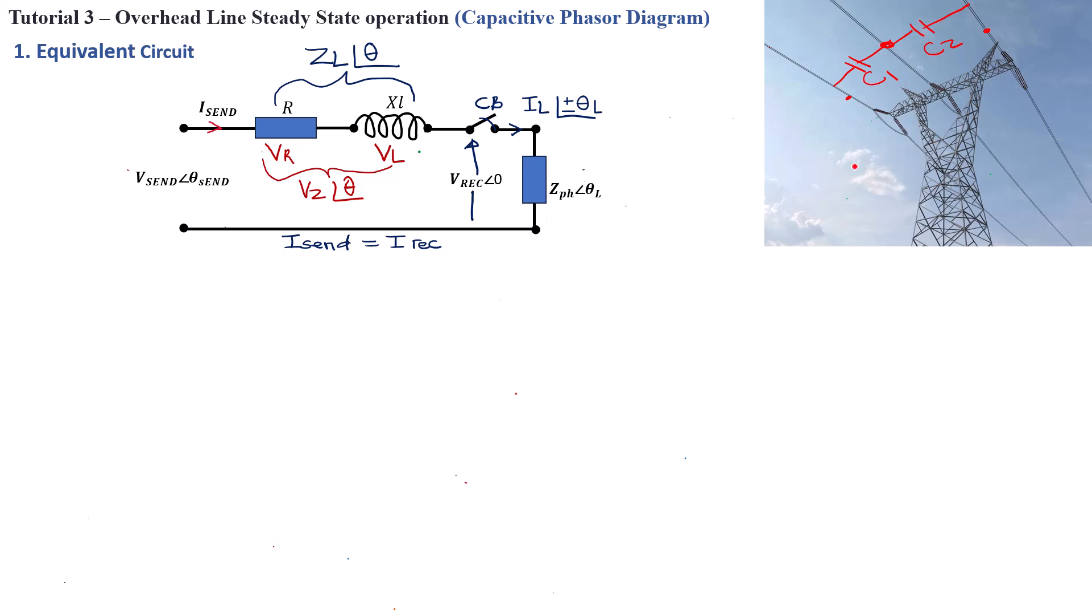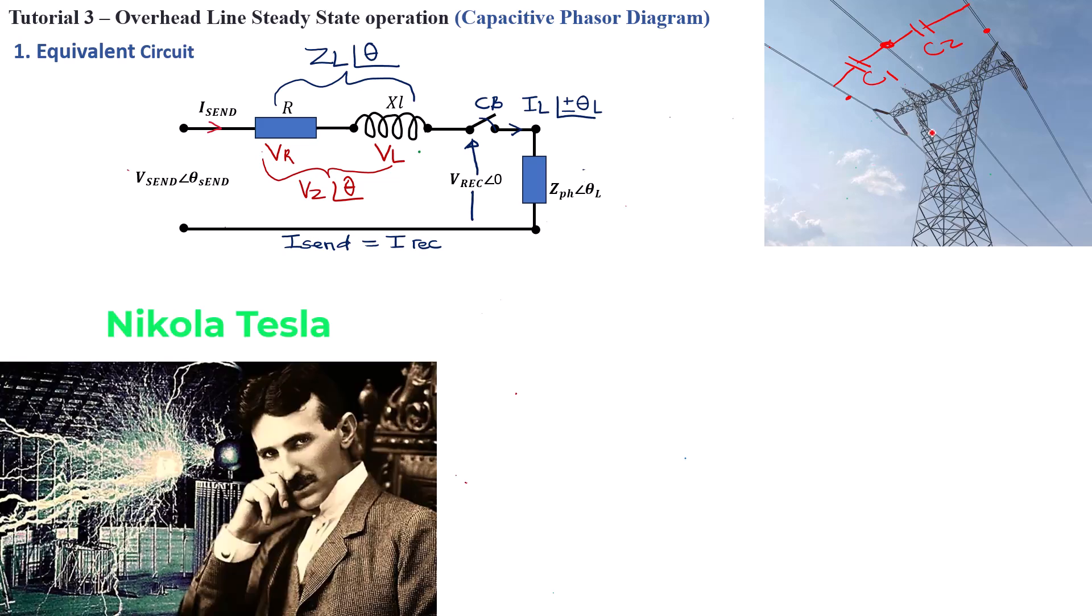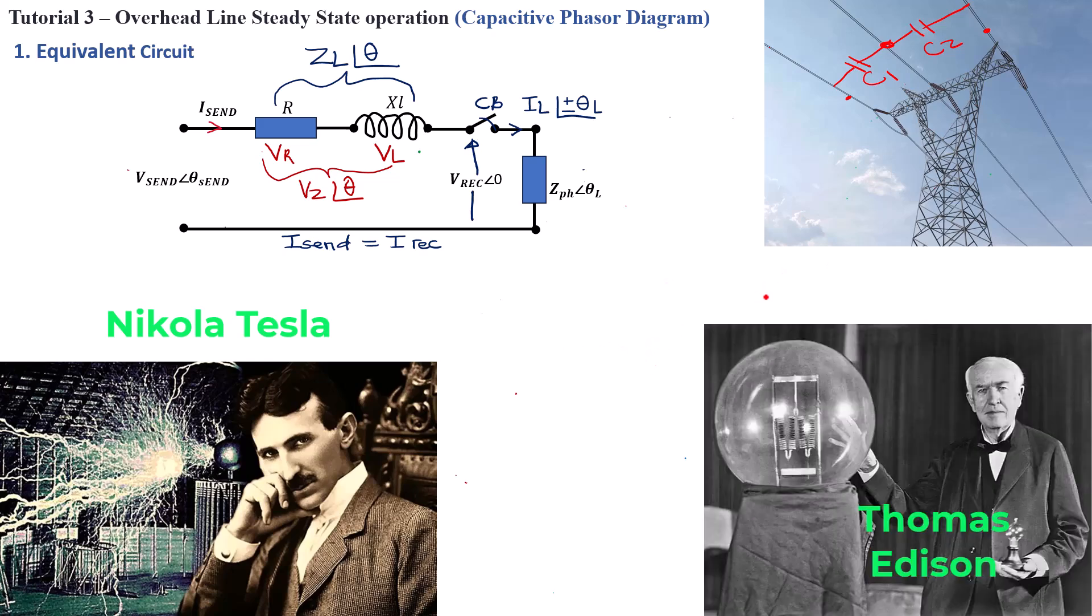And that is the case because Nikola Tesla, about 110 years ago or so, won the argument against Thomas Edison on why to use AC instead of DC. Because Thomas Edison was pushing the argument about DC power transmission, DC system.